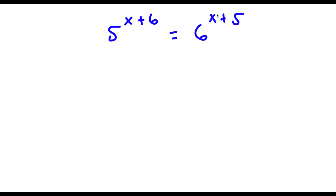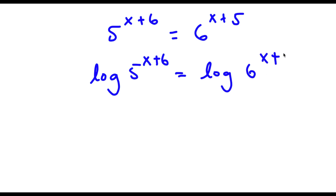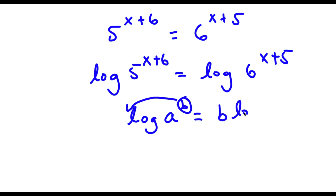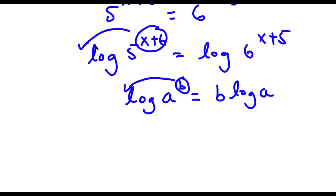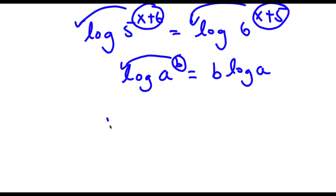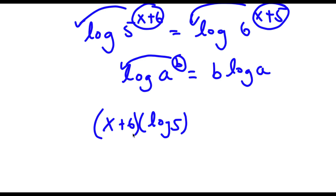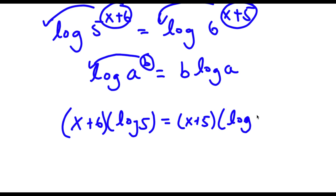Alright, so I have 5 to the power of x plus 6 is equal to 6 to the power of x plus 5. The first thing I'm going to do is take the log on both sides. So now I have log 5 to the power of x plus 6 is equal to log 6 to the power of x plus 5. Using the log power property, I can move x plus 6 and x plus 5 to the front. So now I have x plus 6 times log 5 is equal to x plus 5 times log 6.